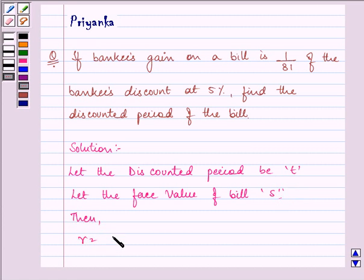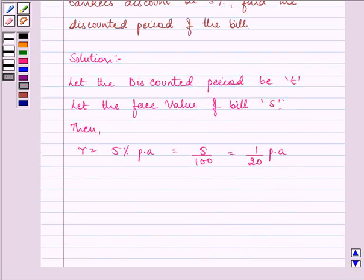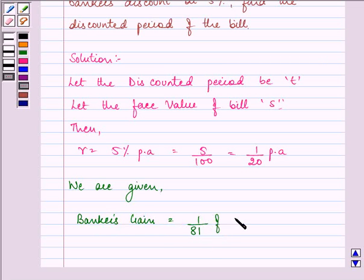We are given the rate of interest as 5% per annum, that will be equal to 5 upon 100, that can be further written as 1 upon 20 per annum. We are given that bankers gain is 1 by 81 of bankers discount.